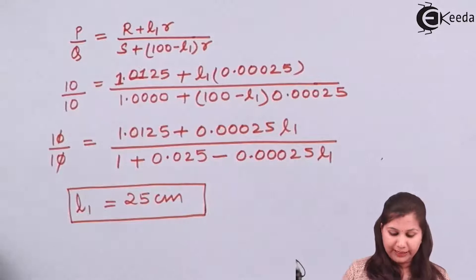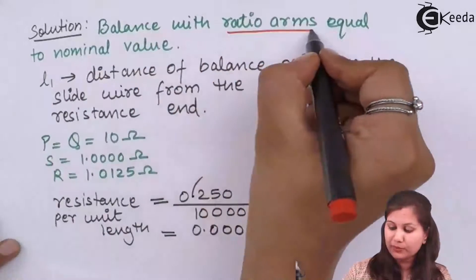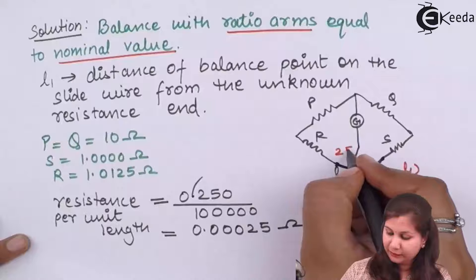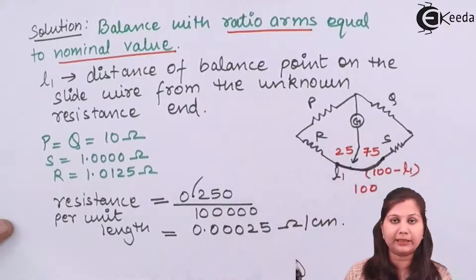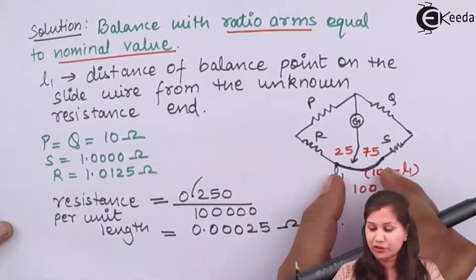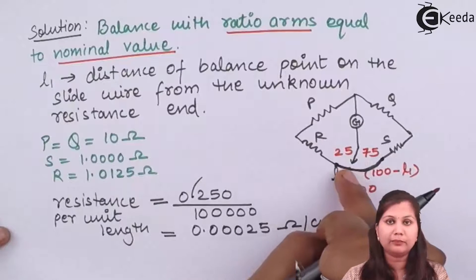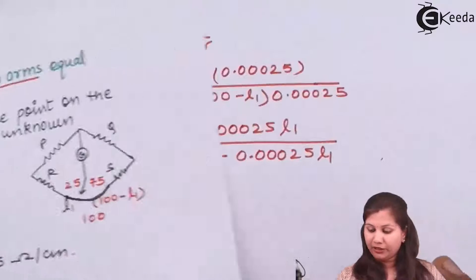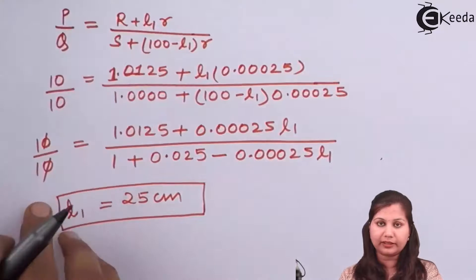So the balance point when using the nominal ratio arm values is at 25 scale divisions, with the remaining 75 scale divisions on the other side. Now we take the second condition when the ratio arms differ from their nominal value.